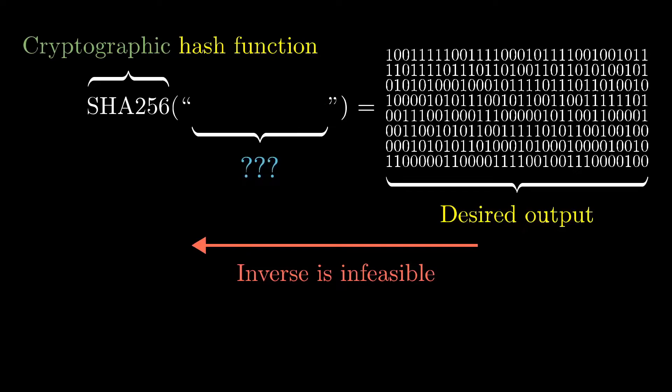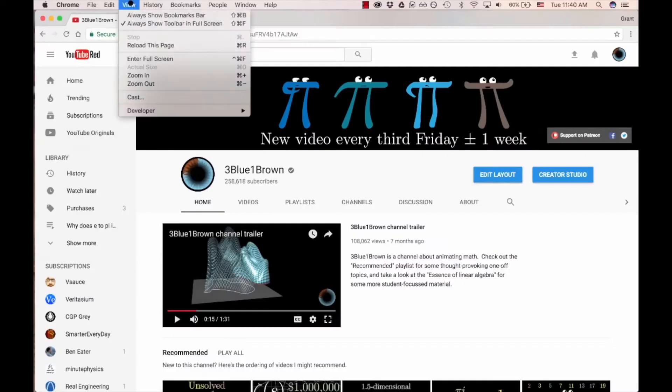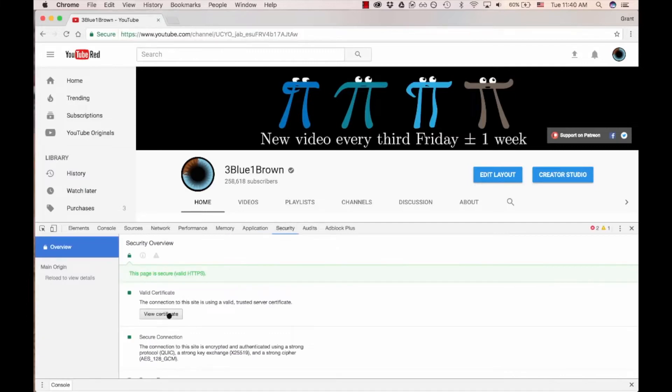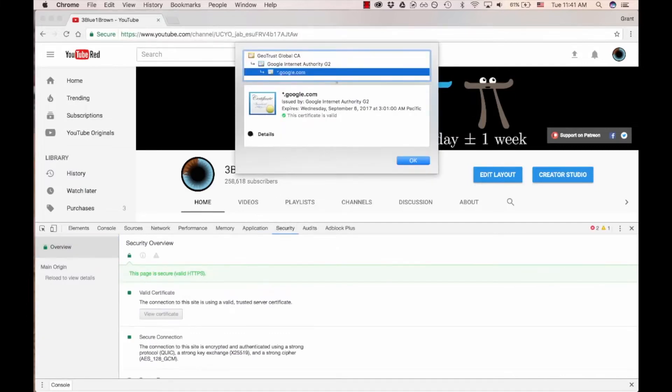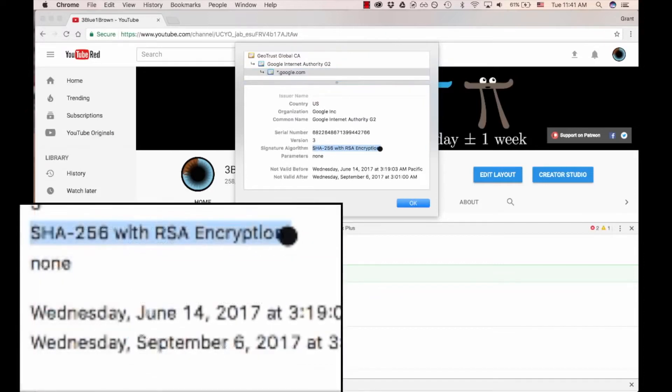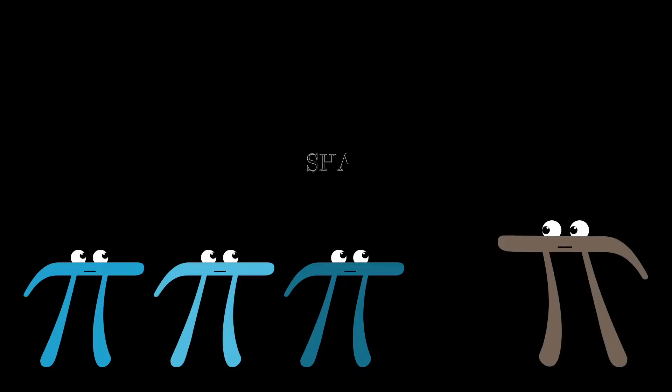If you were to look at what algorithms underlie the secure connection that your browser is making with YouTube right now, or that it makes with your bank, you will likely see the name SHA-256 show up in there.